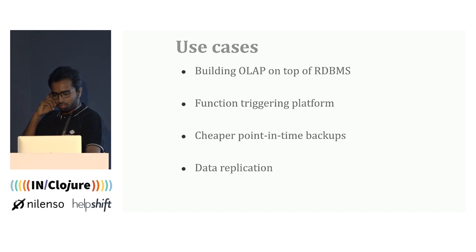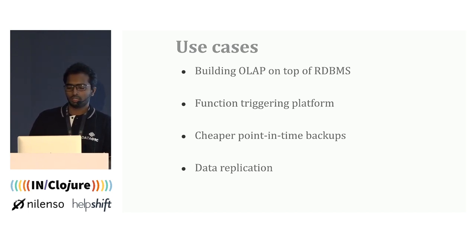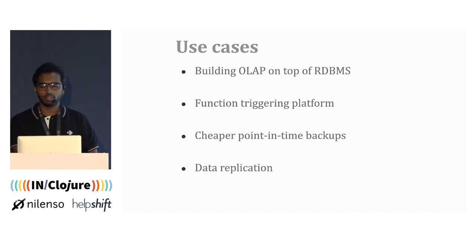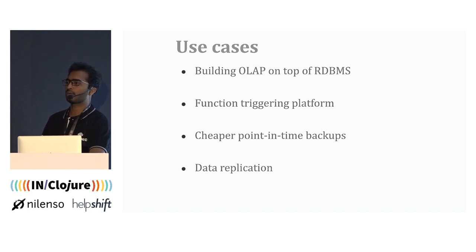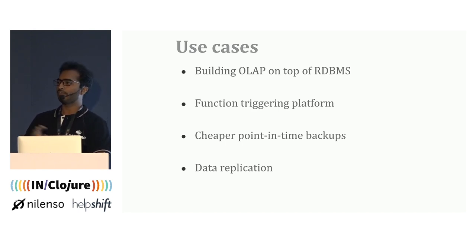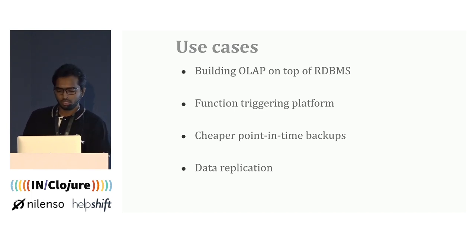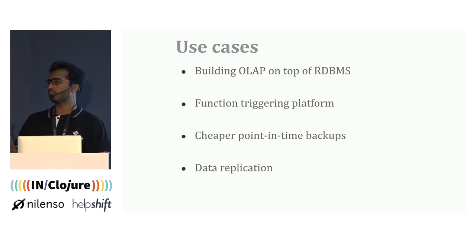Now we know how we've built this data pipeline, but let's understand what use cases it can solve. The first is building an online analytics processing pipeline on top of RDBMS. The second is a function triggering platform — triggers are non-blocking actions for end users, like sending a registration email after a user signs up. All kinds of side effects can be triggered from that change stream. Other use cases include taking cheaper point-in-time backups, and replicating your data store from one store to another using this architecture.